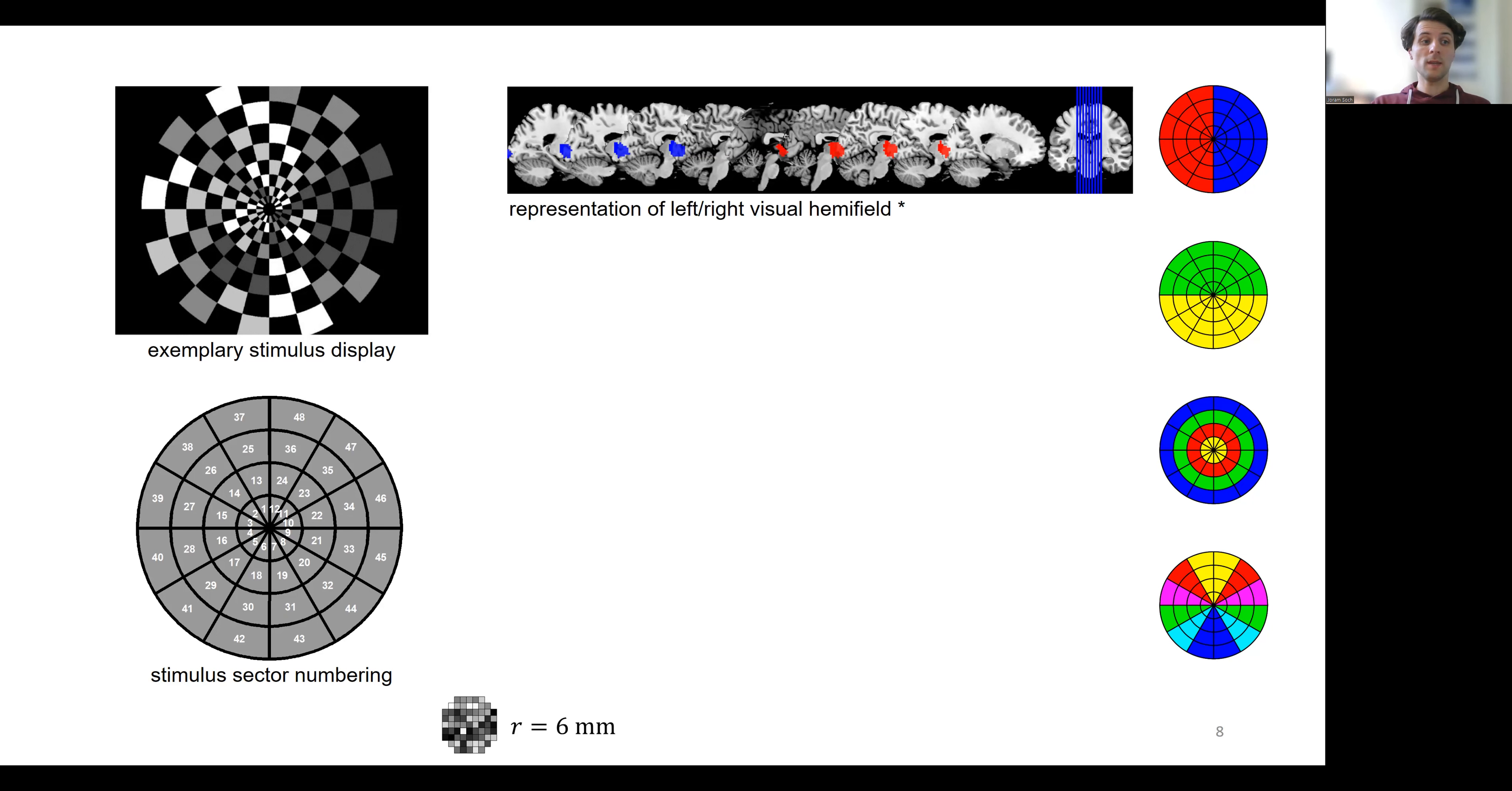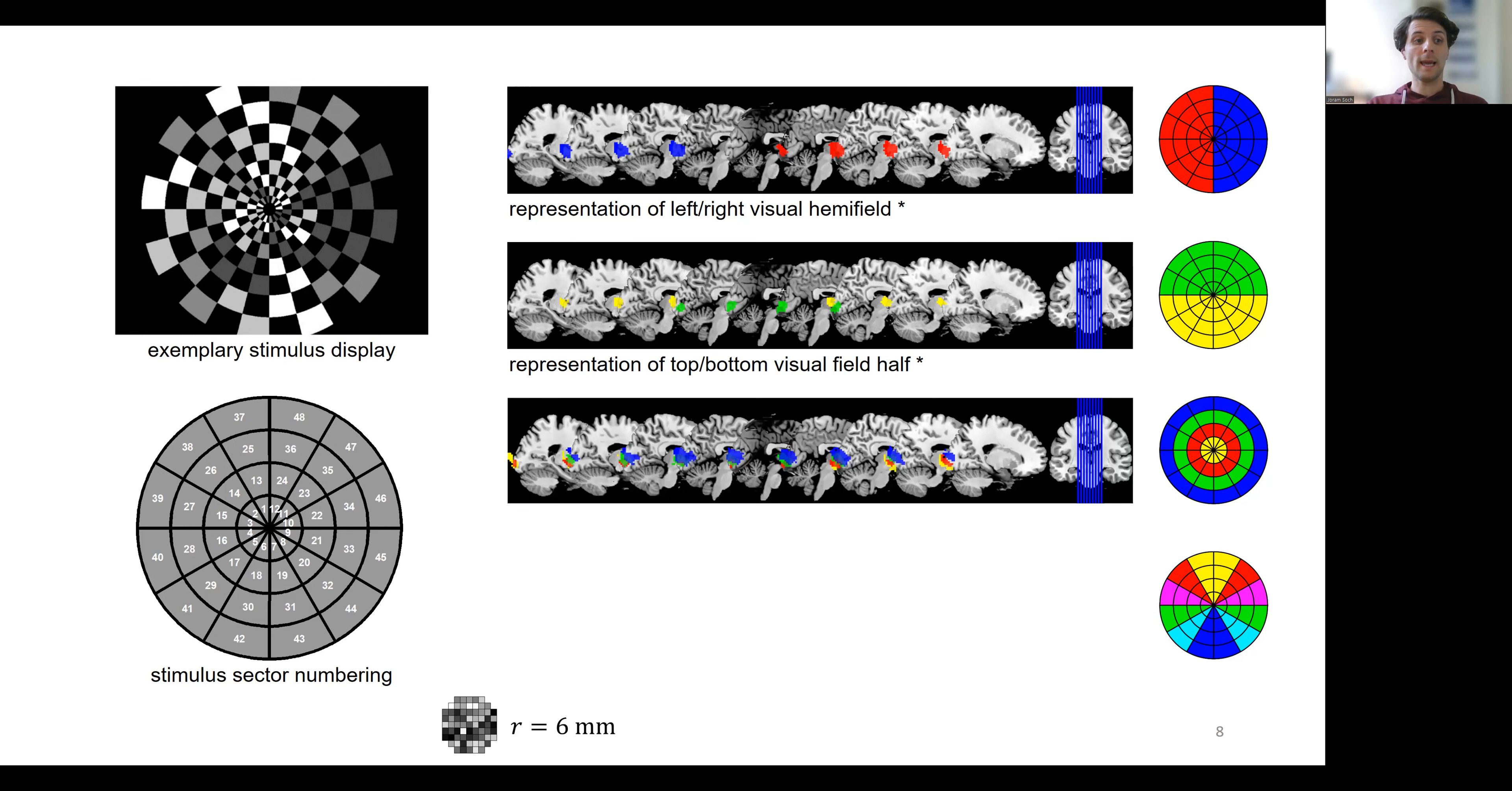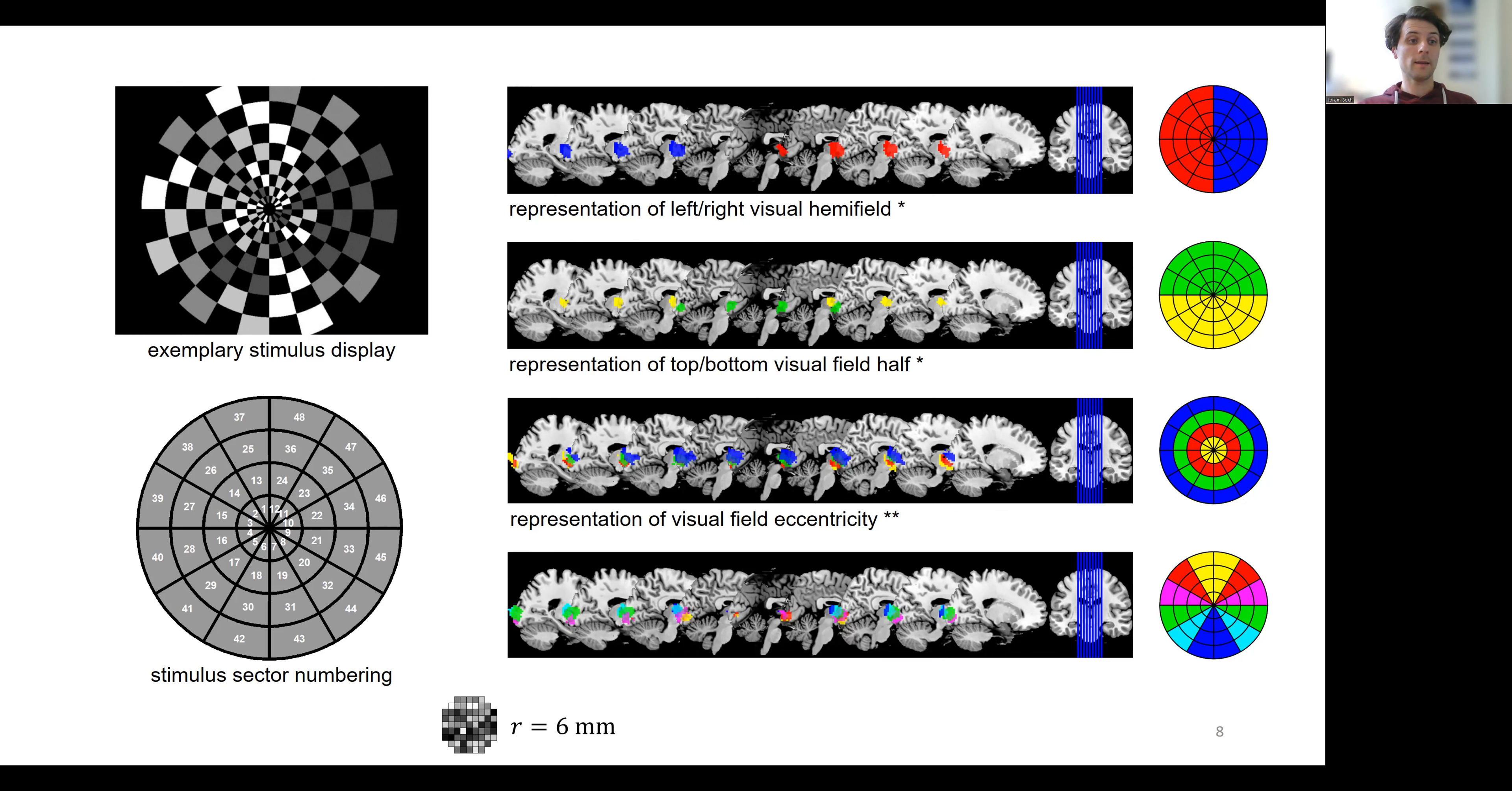We also confirmed mapping of visual field half to medial versus lateral parts of occipital cortex, as well as representation of angle along a dorsal ventral axis.